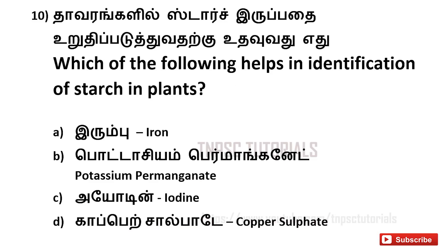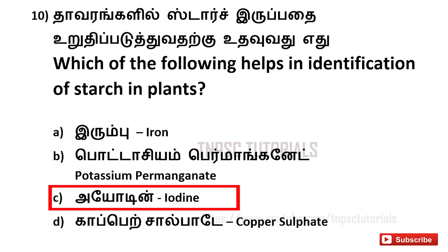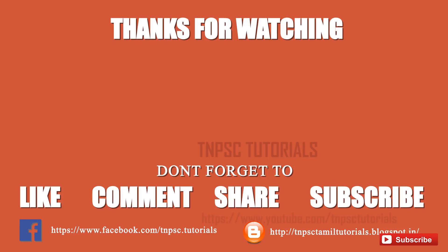Tenth one: Which of the following helps in the identification of starch in plants? A. iron, B. potassium permanganate, C. iodine, D. copper sulfate. The answer is C. iodine.